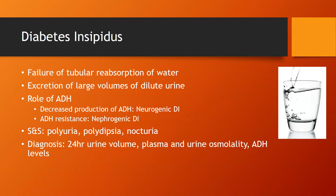Diabetes insipidus is a failure of tubular reabsorption of water, causing excretion of large volumes of very dilute urine, and the patient is very thirsty all the time. This is related to antidiuretic hormone (ADH), and the etiology of diabetes insipidus is twofold.